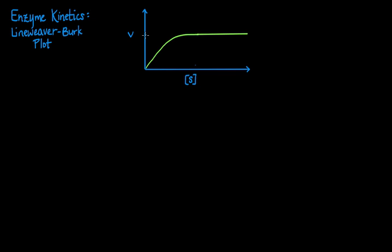To point out a couple of key points on this graph, there is the Vmax, or maximum velocity, at which the enzymatic reaction occurs.